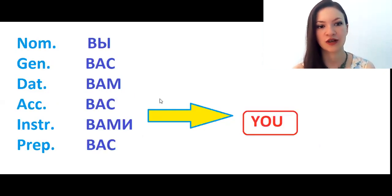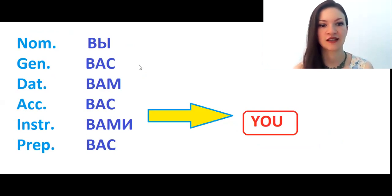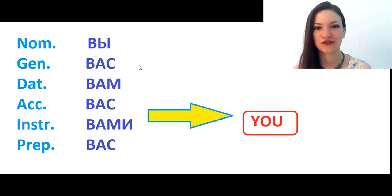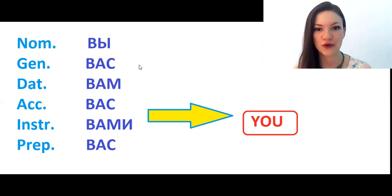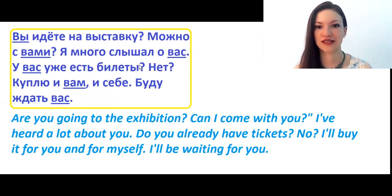Now let's talk about the next personal pronoun: вы, meaning 'you' plural. Nominative: вы. Genitive: вас. Dative: вам. Accusative: вас. Instrumental: вами. Prepositional: вас. In Russian we have six forms of this pronoun, while in English you have only one — 'you.' That's why Russian is quite difficult if English is your native language.